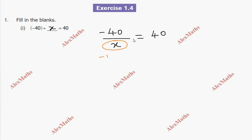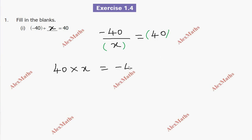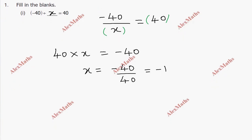Multiply both sides: 40 into x equals minus 40. If x equals minus 40 divided by 40, we get x equals minus 1. The minus and the number cancel, so the calculation gives us minus 1. So the answer is minus 1.